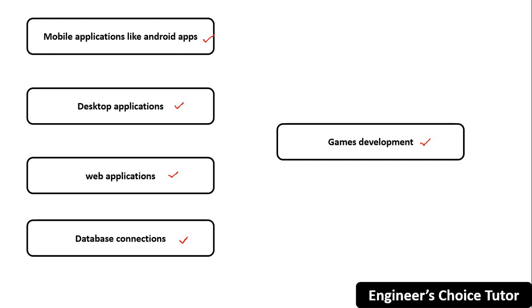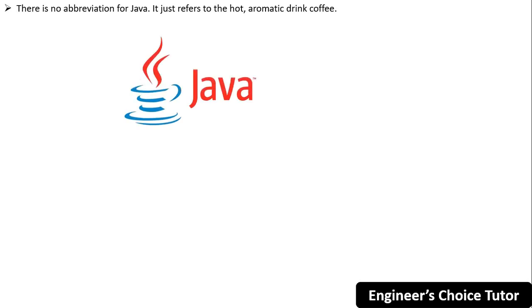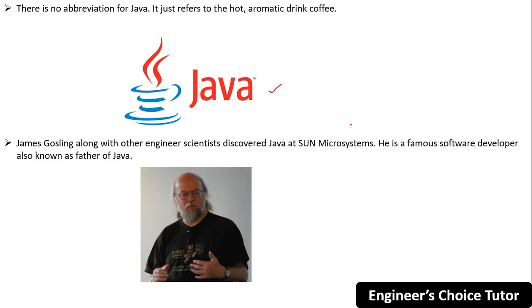Java is also used for game development and many more fields. There is no abbreviation for Java — it just refers to a hot aromatic drink: coffee. This is the reason the Java programming language icon is a coffee cup. James Gosling, along with other engineers and scientists, discovered Java at Sun Microsystems. He is a famous software developer also known as the father of Java.